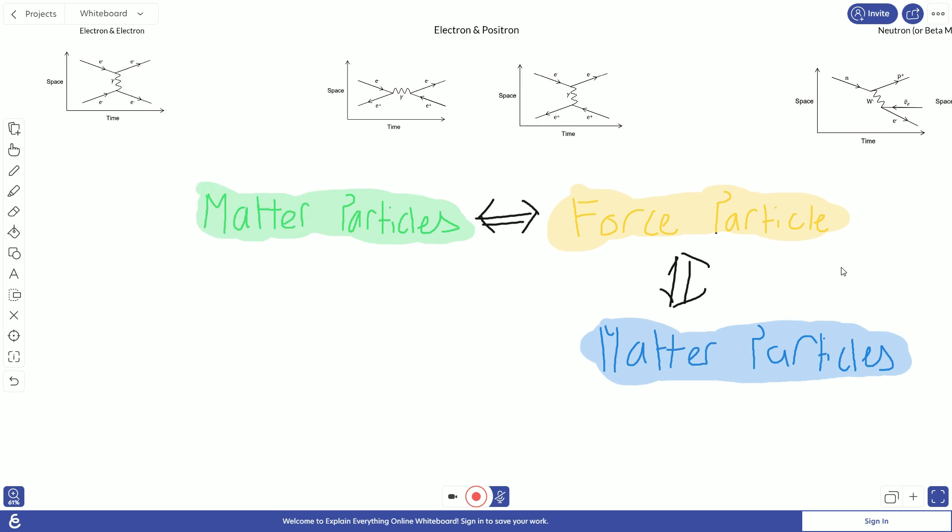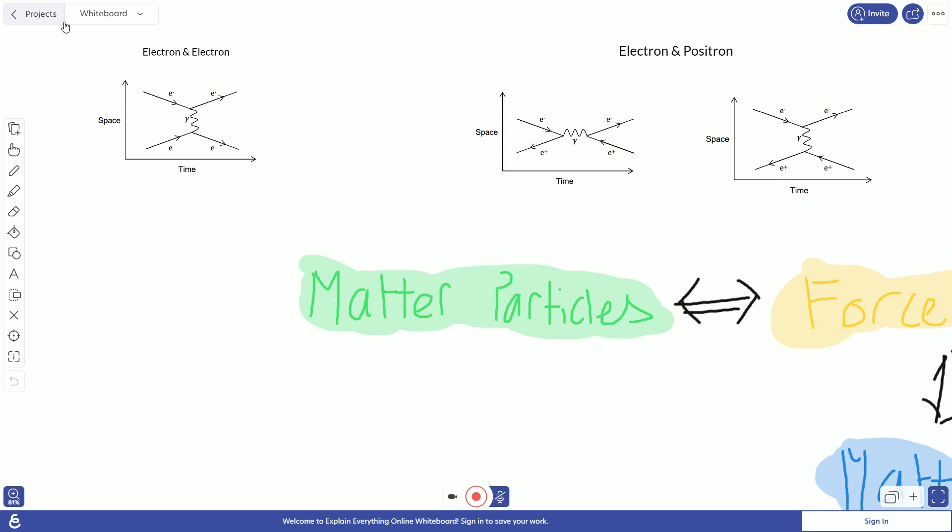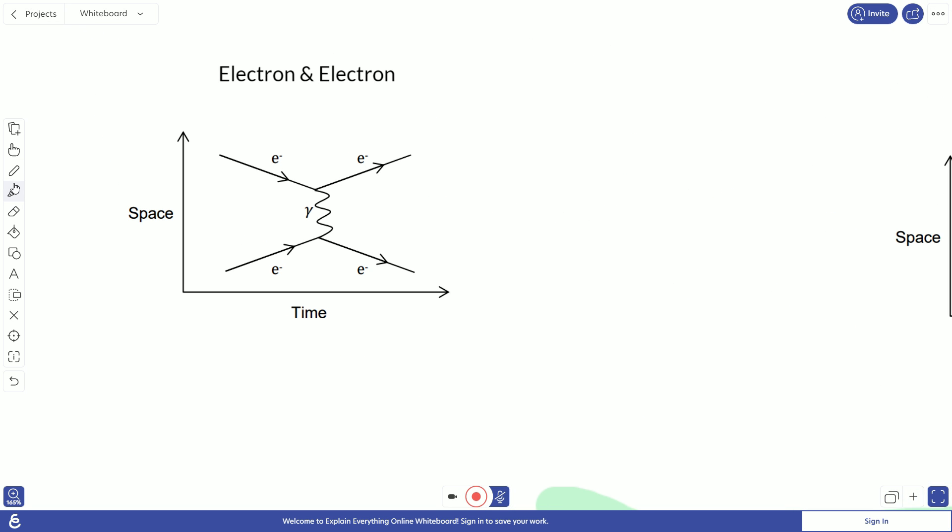So let's start by looking at the electron and the electron. Here we have our matter particles which are originally in green, and we have two electrons. Now in a Feynman diagram we have space here and then we have time down here. So these two electrons go into closer proximity until they interact by a force carrying particle, do that in yellow, and then they produce two electrons on the other side.